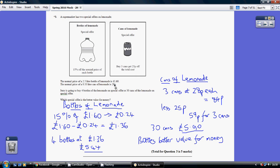are 28p each, so that's 84p for three cans. Three lots of 28 is 84, but we take off the 25p reduction, so actually three cans cost 59p. Now we need 30 cans, not three—that's ten times as many.